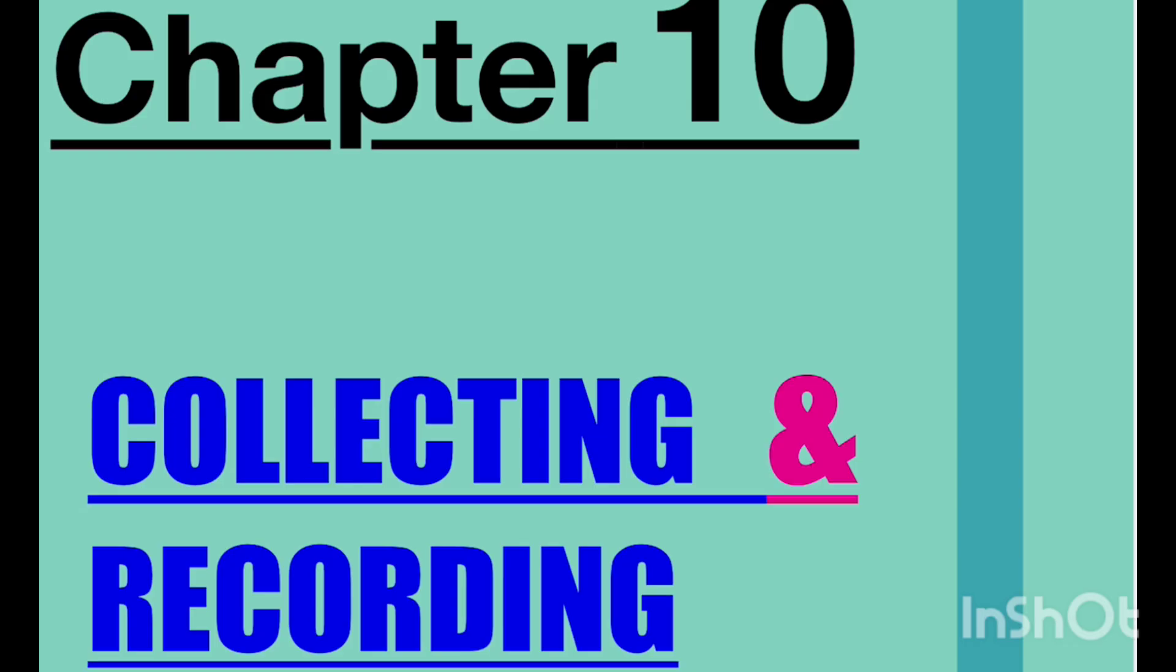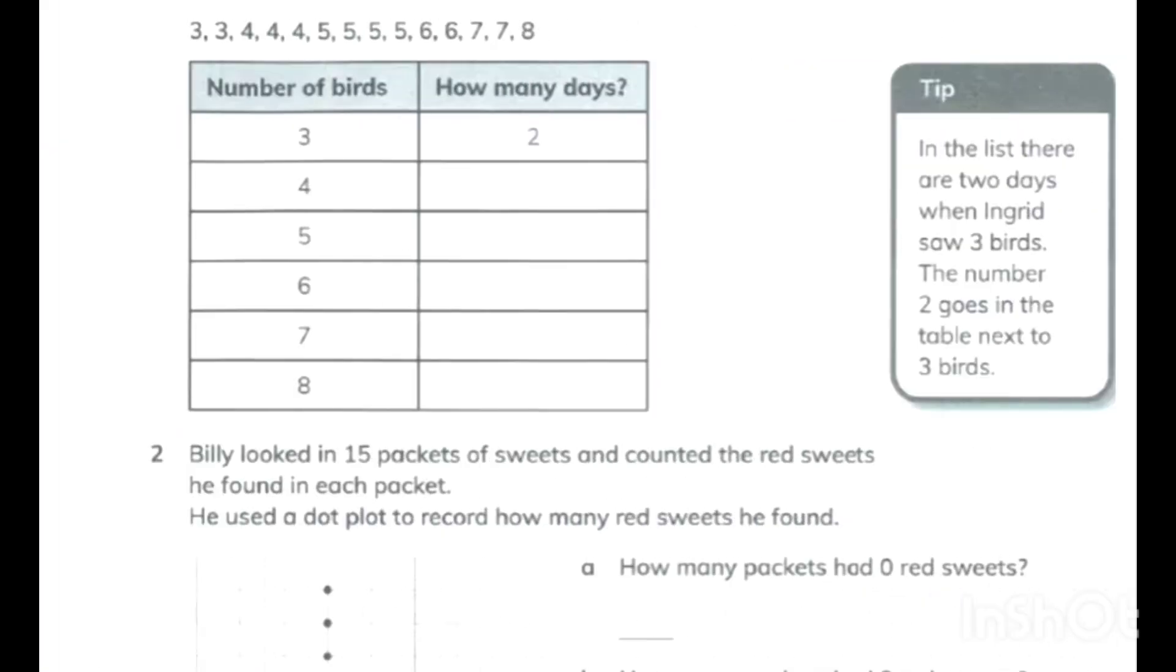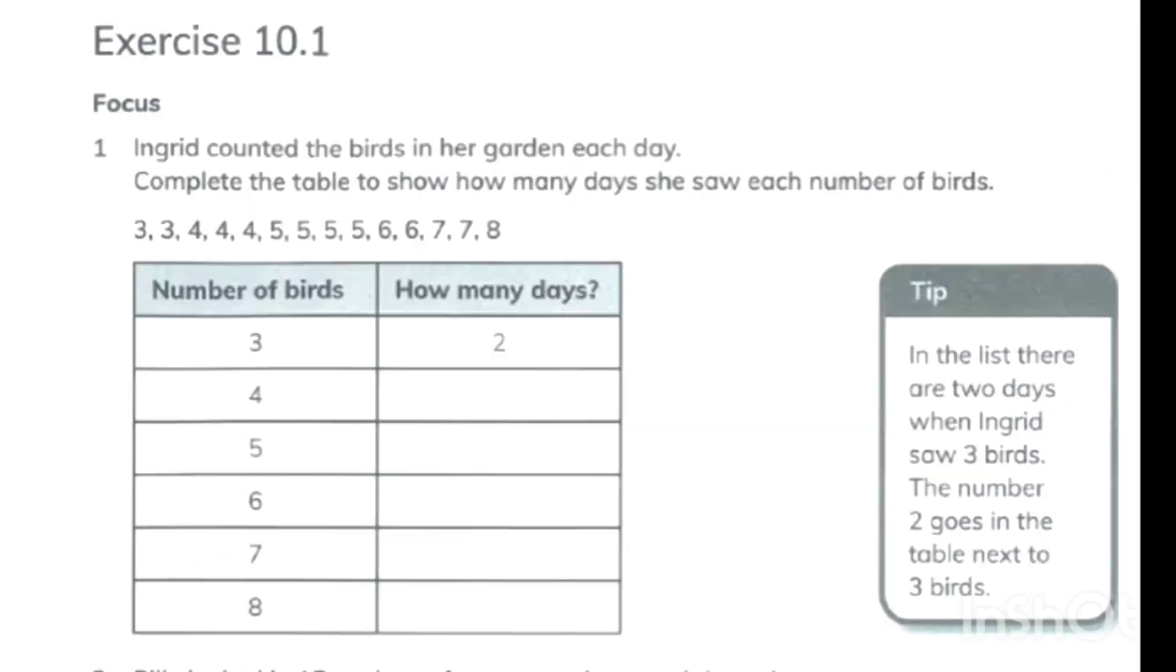Good day students, today we are going to cover Cambridge primary maths workbook 4, chapter 10. Let's start with exercise 10.1. First column you have given number of birds, in second column you have given number of days. Let's complete this table.